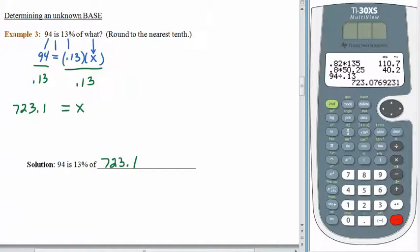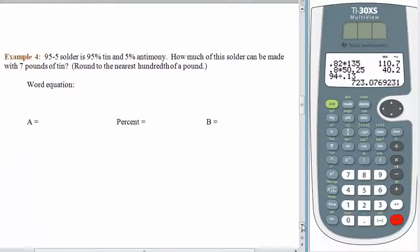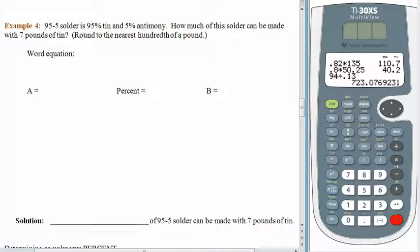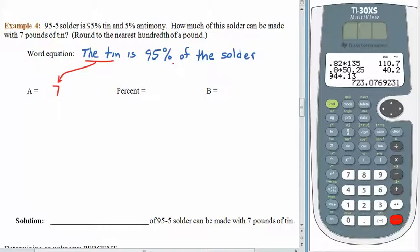But really, that's all we need. 723.1. There, make our notes complete. It's that easy. The key, of course, is getting that word equation down. So let's try a situation. Here we have some solder. This 95-5 solder is 95% tin and 5% antimony. Must be how it gets its name. How much of this solder can be made with 7 pounds of tin? Well, let's see. What do we know? The tin is 95% of the solder. Okay. What do we know? Do we know anything about the tin? We do. We have 7 pounds of it. A is 7. As a decimal, we'll use 0.95. How much solder do we have? Well, I don't know. That's what the question was asking.